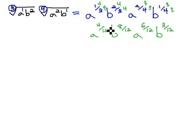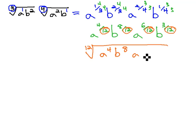What you may notice is now, every denominator is a denominator of twelve. They all have the same denominator, and so we can write this in radical form with that denominator, or index, of twelve. Leaving behind a to the fourth, b to the eighth, a to the sixth, b to the third.